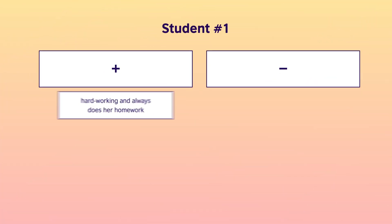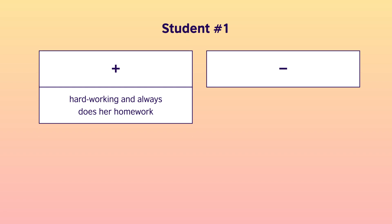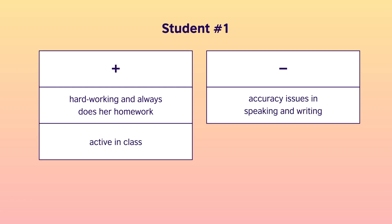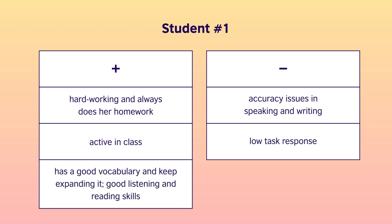Our first student is quite hardworking, always does her homework and is active in class. She does, however, have accuracy issues, both in speaking and writing, and her writing rarely answers the question asked exactly — low task response. She has a substantial vocabulary and keeps expanding it. Her listening and reading skills are in great shape. What can we do to help her? Pause the video and think about it in terms of activities. Please write them down.